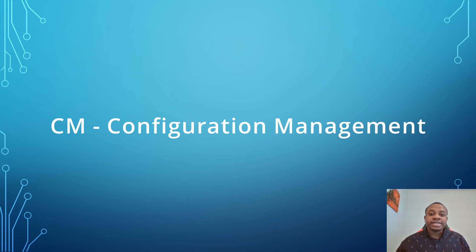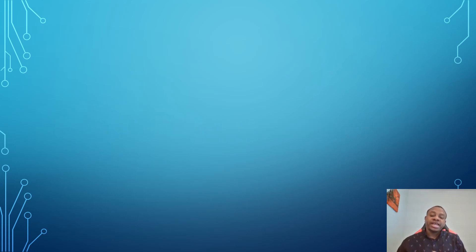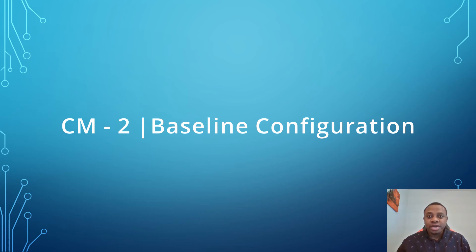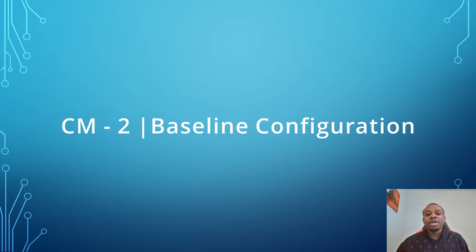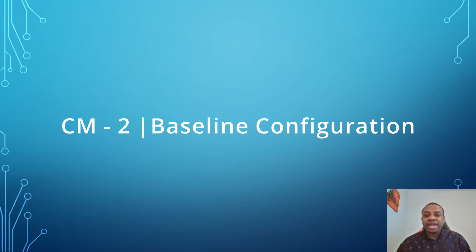We'll be looking at some of the controls that fall under the configuration management control family, and we'll be looking at the CM2 control, which is the baseline configuration. The CM2 control seeks to ensure that organizations maintain and store a baseline configuration for their system.